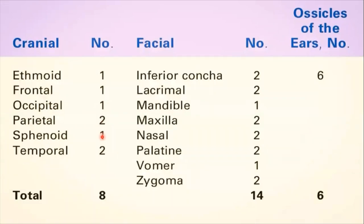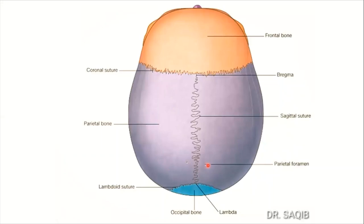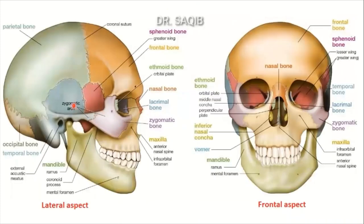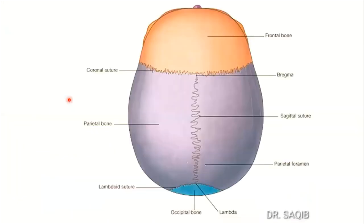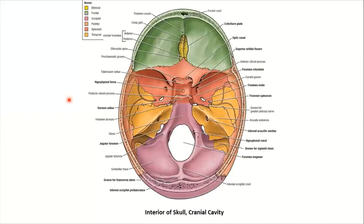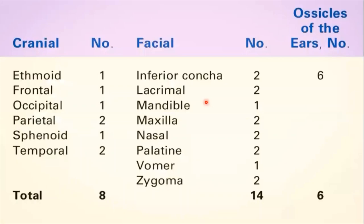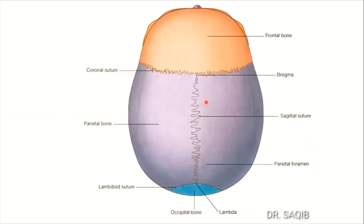The sphenoidal bone is a single bone with a body in the center and greater and lesser wings. The parietal bones are on each side, as are the temporal bones. From inside, you can see the sphenoid bone with its body and wings, the occipital bone, and the temporal bone.